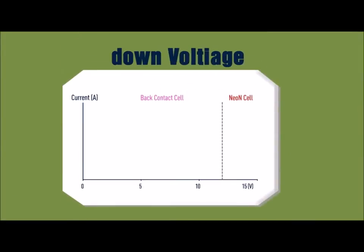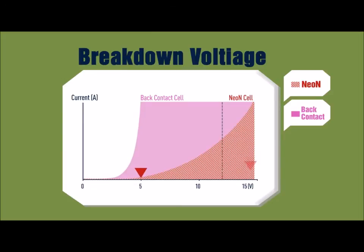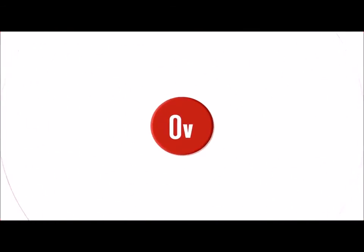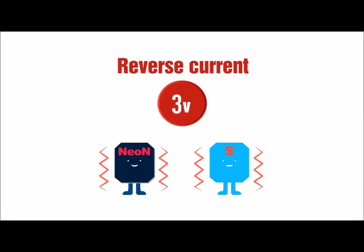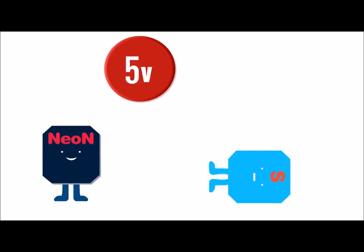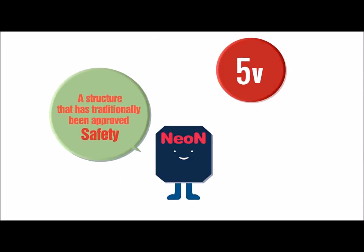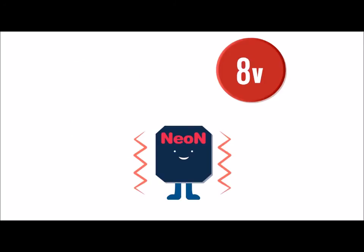Neon has shown a superior result in breakdown voltage tests, an indicator for hot-spot stability. Company S's module breaks when the reverse current flows above 5 volts, which could lead to a fire from the sparks. LG Mono X Neon cell and module, on the other hand, has applied a structure that has traditionally been approved to withstand as much as 15 volts of reverse current flows.